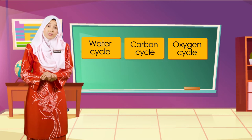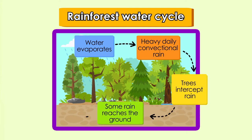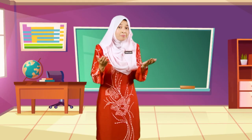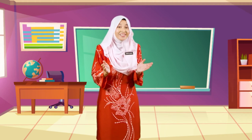Living things play a very important role in nutrient cycles. In the water cycle, plants return water absorbed by the roots back into the environment as water vapor through transpiration, and also help retain water content in the ground to prevent the soil from becoming dry. In the carbon and oxygen cycles, living things carry out respiration, consuming oxygen and releasing carbon dioxide, while plants take in carbon dioxide for photosynthesis and return oxygen to the atmosphere.